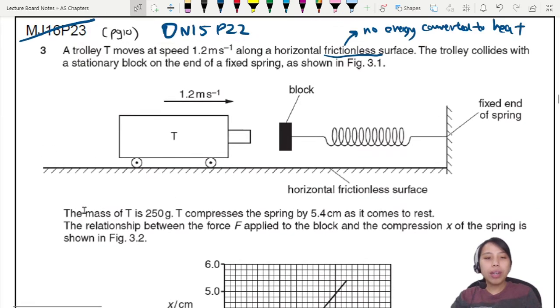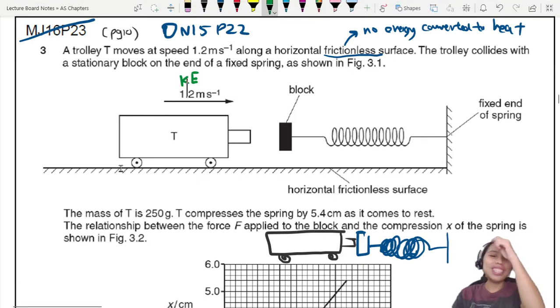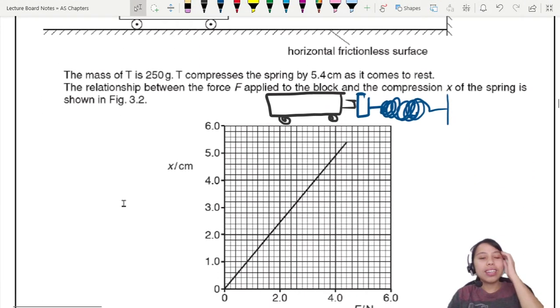When this thing hits, the mass of the trolley is given, compressed by 5.4 cm as it comes to rest. The block and trolley compress until it cannot move anymore. Initially you have a lot of kinetic energy all being converted to something else. They give us the graph of the force applied to the block.